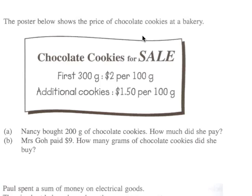it's $2 per 100 grams. That means 100 grams, 200 grams, 300 grams, all will cost you $2 each. Not in total, but each. And then any additional cookies that you buy is going to be costing you $1.50 per 100 grams.